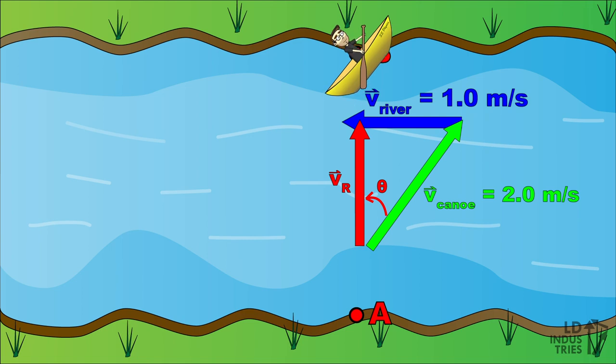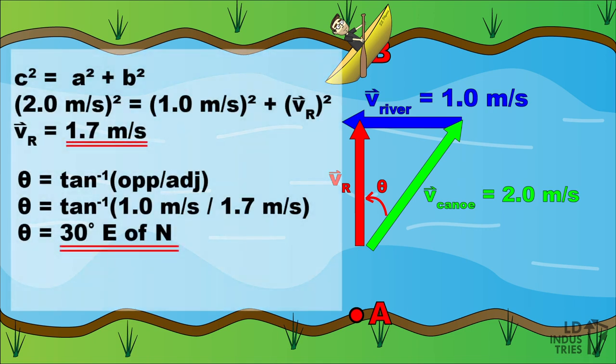Note, this is an example of a resultant not being the hypotenuse of the triangle. We can even calculate the magnitude and direction of this resultant. Just be careful when you use the Pythagorean formula that you make side C the hypotenuse of the triangle, two meters per second, and then solve for either side A or B, which is the resultant.